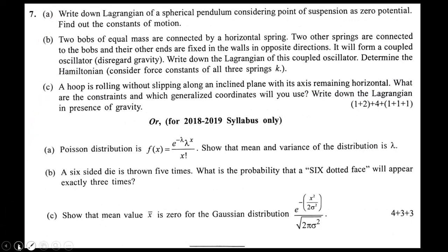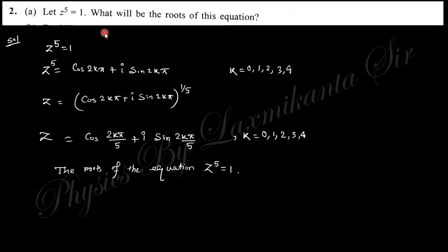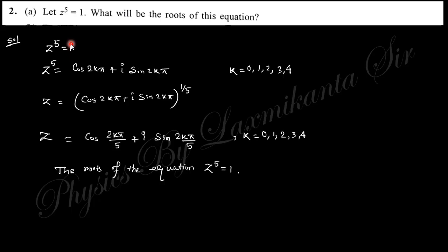So let's start today's solution. The equation is z to the power 5 equals to 1. What will be the roots of this equation? So 1 can be written as cos(2kπ) + i·sin(2kπ), where k is 0, 1, 2, 3, etc. If you put k equal to 0, cos(0) is 1 and sin(0) is 0, so you will finally obtain this one. This is the general solution of 1.